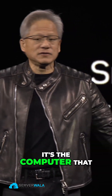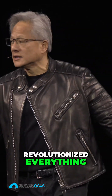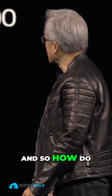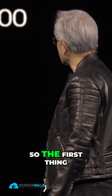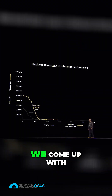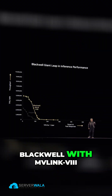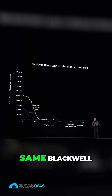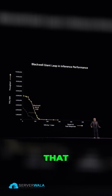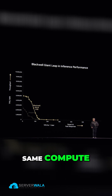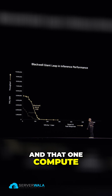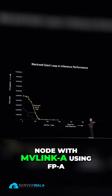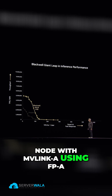Hopper — it's the computer that revolutionized everything. So how do we make that better? The first thing we do is come up with Blackwell with NVLink 8. Same Blackwell, that one same compute node with NVLink 8 using FP8.